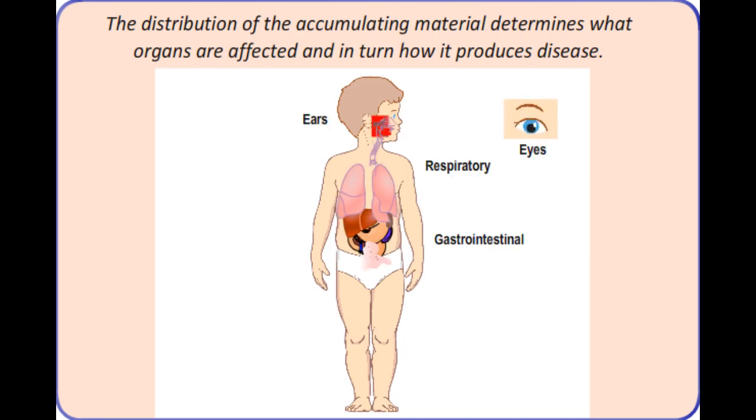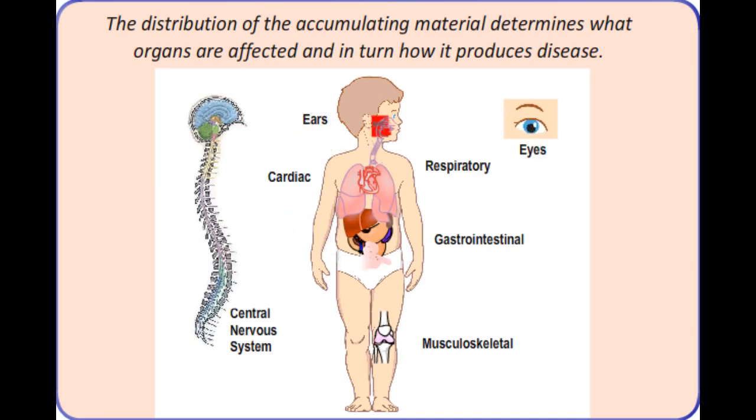The distribution of the accumulating material determines what organs are affected and in turn how it produces disease.